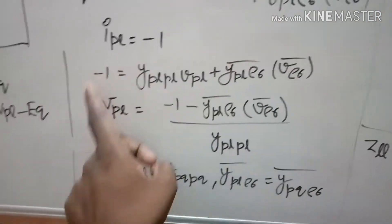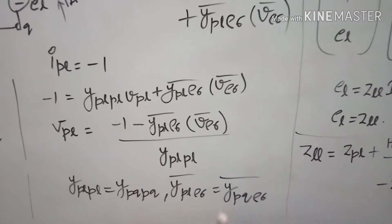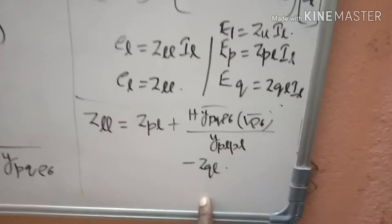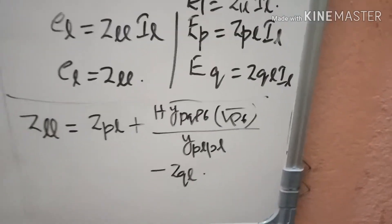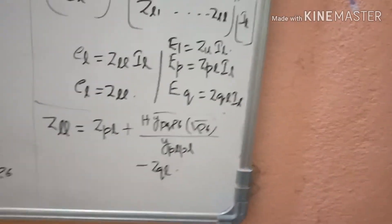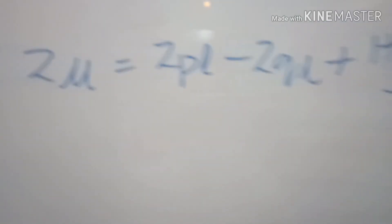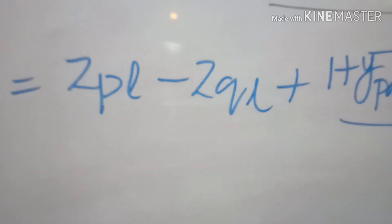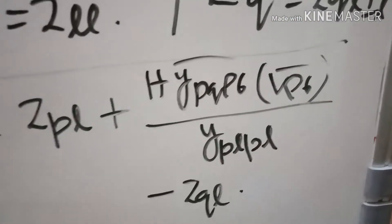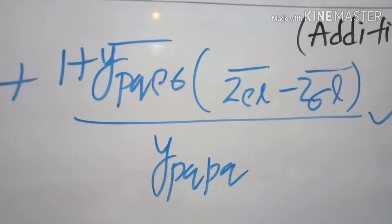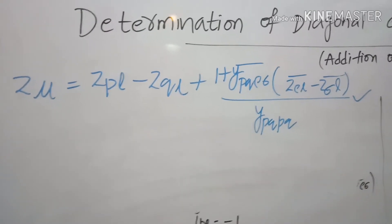Substituting v_pl by replacing y_pl_pl with y_pq_pq and y_pl_rho_sigma_bar with y_pq_rho_sigma_bar, and Z_ql in place of eq, and writing v_rho_sigma_bar as z_rho_l_bar minus z_sigma_l_bar, the equation is converted. The final expression is: Z_ll equals Z_pl minus Z_ql plus one divided by y_pq_pq, plus y_pq_rho_sigma_bar into (z_rho_l_bar minus z_sigma_l_bar) divided by y_pq_pq. This is the final expression for the diagonal element when there is an addition of a link.